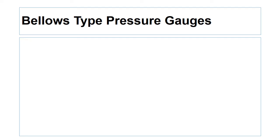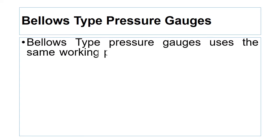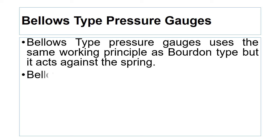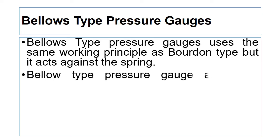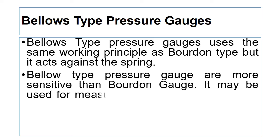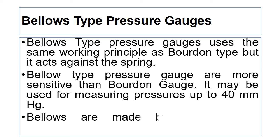The next pressure gauge is the bellows type pressure gauge. Bellows type pressure gauges use the same working principle as the Bourdon type pressure gauge, but act against a spring. Bellows type pressure gauges are more sensitive than Bourdon type pressure gauges and may be used for measuring pressure up to 40 mm mercury column. Bellows are made by joining many diaphragms together.